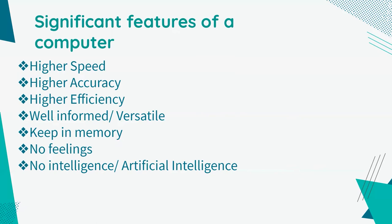The final feature I'm going to talk about is that the computer has no intelligence. A computer system is completely dependent on humans on how to work. Until a user gives any kind of instruction, it cannot do any work. And only after completing the given instruction can a computer complete its work.